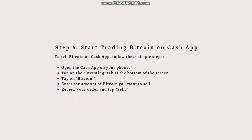Congratulations — you now have your account and Bitcoin address verified, and you are ready to start trading Bitcoin on Cash App. To sell Bitcoin, open the Cash App on your phone, tap on the Investing tab at the bottom of the screen, tap on Bitcoin, enter the amount you want to sell, then review your order and tap Sell.